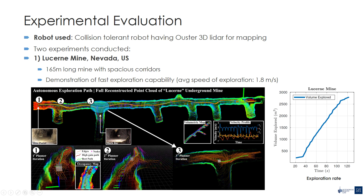In this slide, we present the results of the experiments in the Lucerne mine. This is a long underground mine with spacious corridors. The aim of this experiment is to demonstrate the fast exploration ability of the planner. In this experiment, the robot explored the full length of the mine with an average speed of 1.8 meters per second. The figure on the bottom shows the map generated from the mission and some sample planning steps. The motion primitive tree and the selected path can be seen at three different instances. The plot on the right shows the exploration rate for this mission.